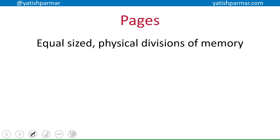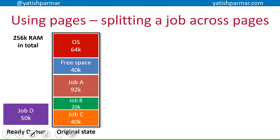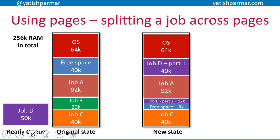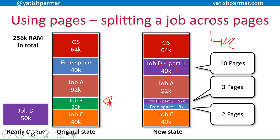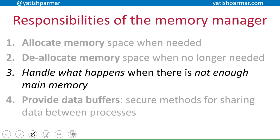Pages are equal-size physical divisions of the main memory. With 4k page sizes, we know there are 10 pages for the first part of job D and 5 pages in the 20k gap. So the second part of job D takes up 3 pages, leaving 8k of free space. However, there's an issue: if we needed 10k for the second part but 10k isn't divisible by 4k, we end up wasting some of that space — a problem we'll come back to shortly.